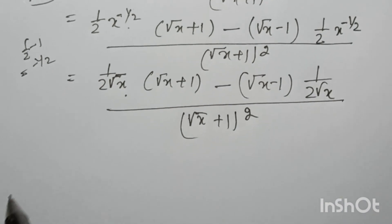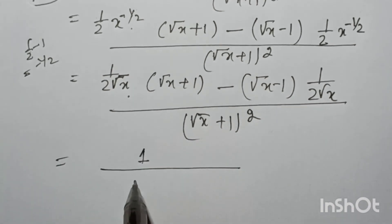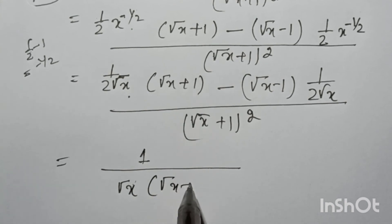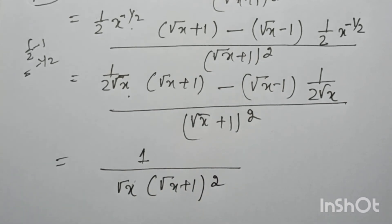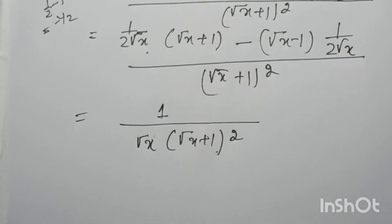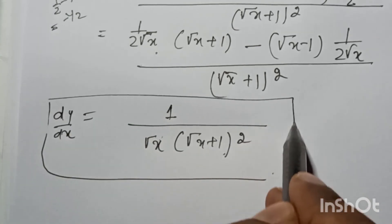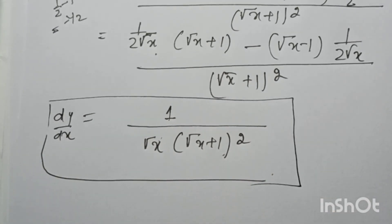So you can write 1 by root x, divided by root x plus 1 square. This is the dy by dx — the final answer. Thank you for watching my channel. Please like, subscribe, share, and comment.